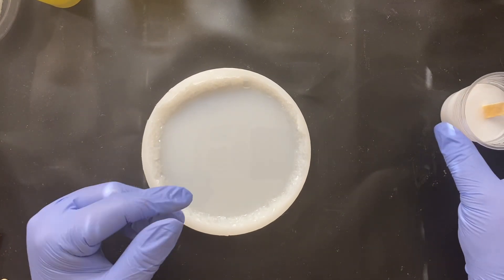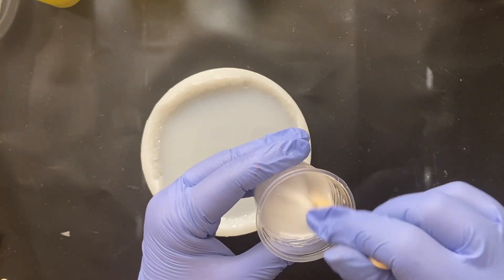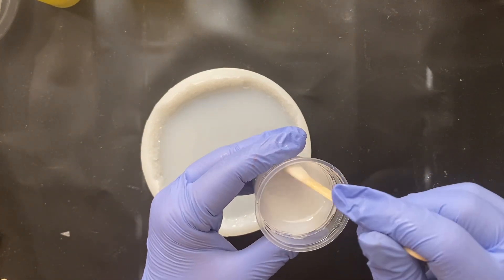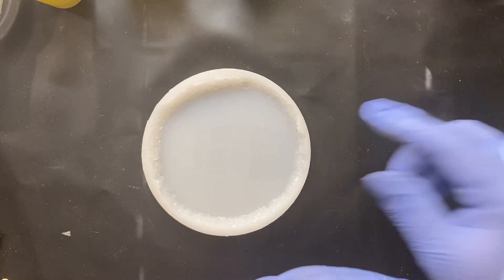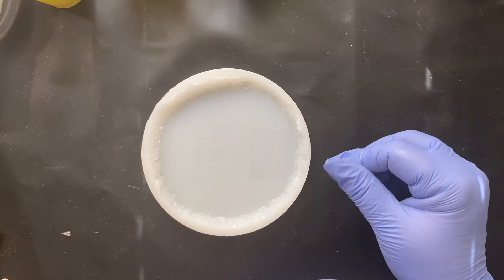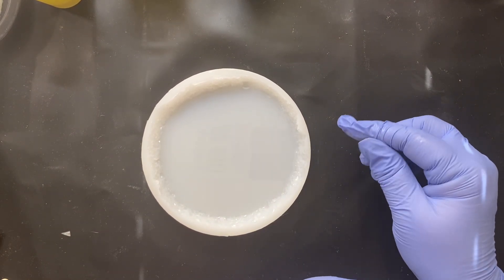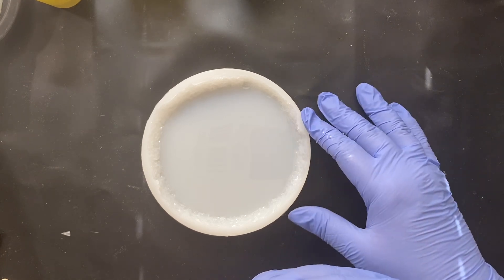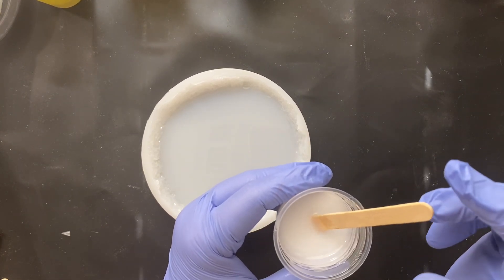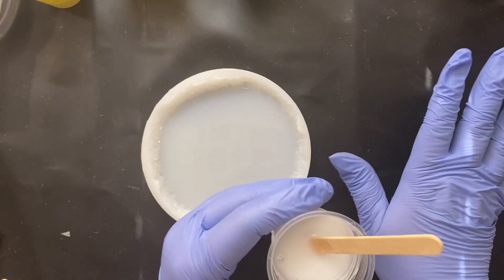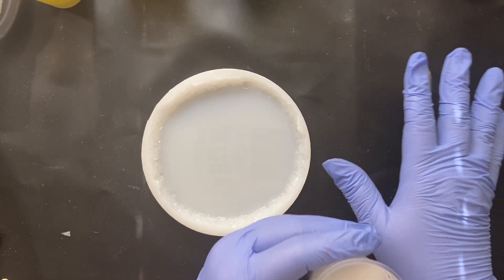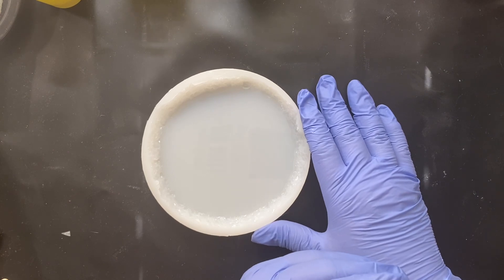I started off by mixing up some Teakspert 2-1 Deep Pour Resin. I mixed up 150 mils for this particular mold. The mold is from Resinable Creations on Etsy. I love their molds and I love even more that they're local in the United States. So their shipping is not outrageous. It really is cost effective and they have very nice molds.